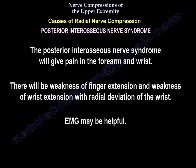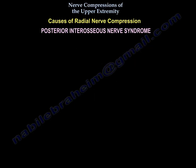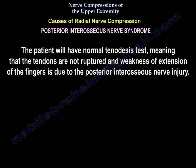Posterior interosseous nerve syndrome gives pain in the forearm at rest. There will be weakness of finger extension and weakness of wrist extension with radial deviation of the wrist. EMG may be helpful. The patient will have a normal tenodesis test, meaning the tendons are not ruptured, and the weakness of finger extension is due to the posterior interosseous nerve injury.